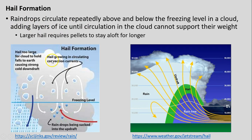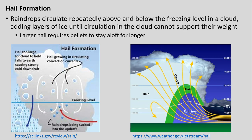Moving to hail: it forms within these big cumulonimbus clouds. Raindrops circulate repeatedly above and below the freezing level in a cloud because of updrafts and downdrafts. That adds layers of ice as the droplet goes above the freezing level, comes back down, gets more moisture around it, goes back up, freezes that moisture, comes back down again — round and round until the updrafts simply can't keep throwing it up anymore. The hailstone becomes so heavy that it falls to the ground. Larger hail requires stronger updrafts to stay aloft.